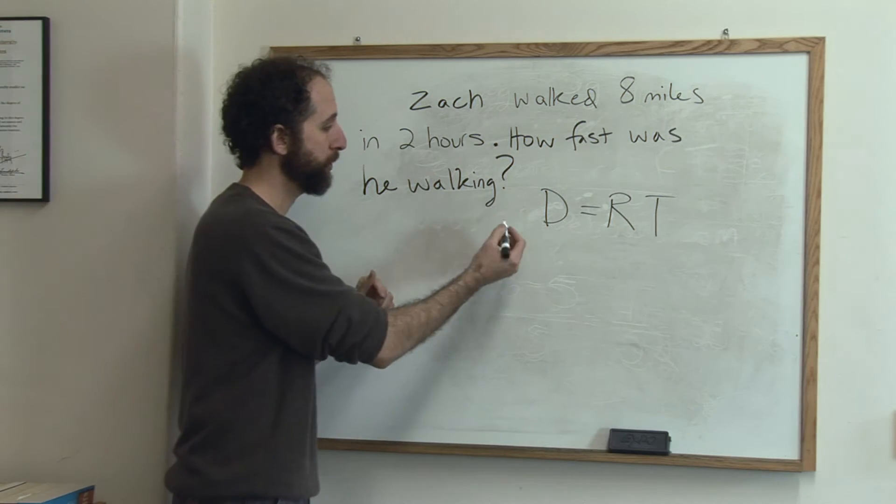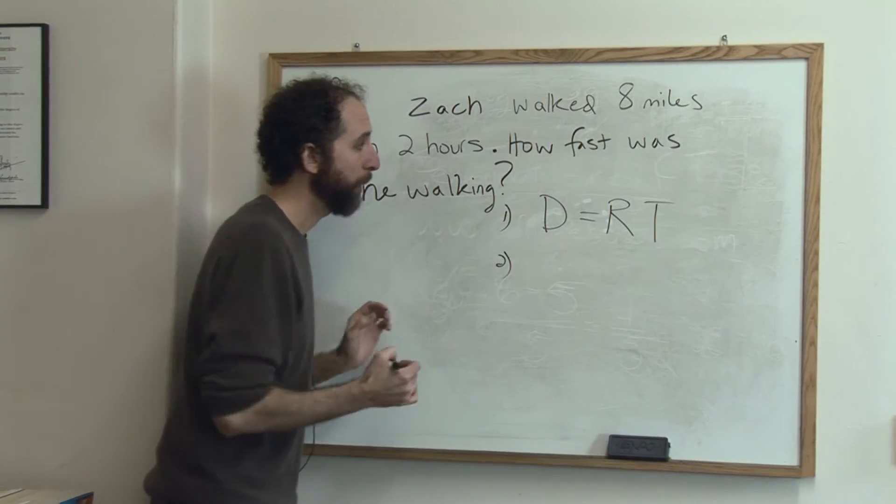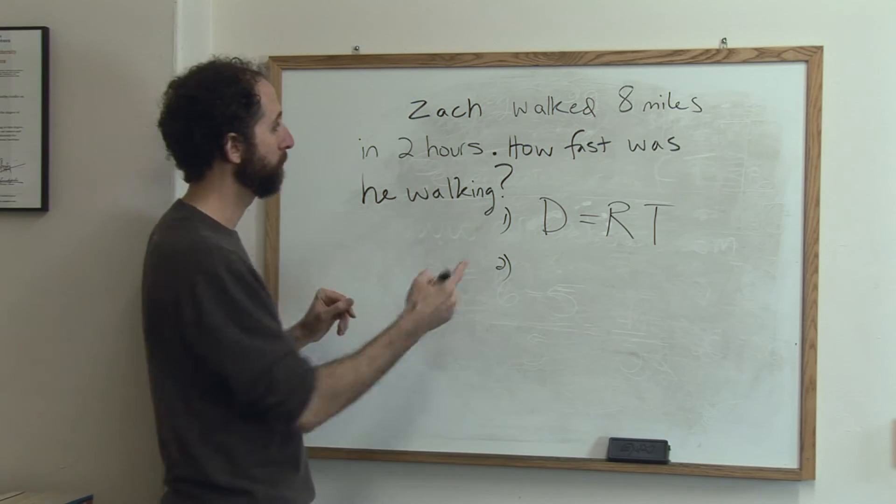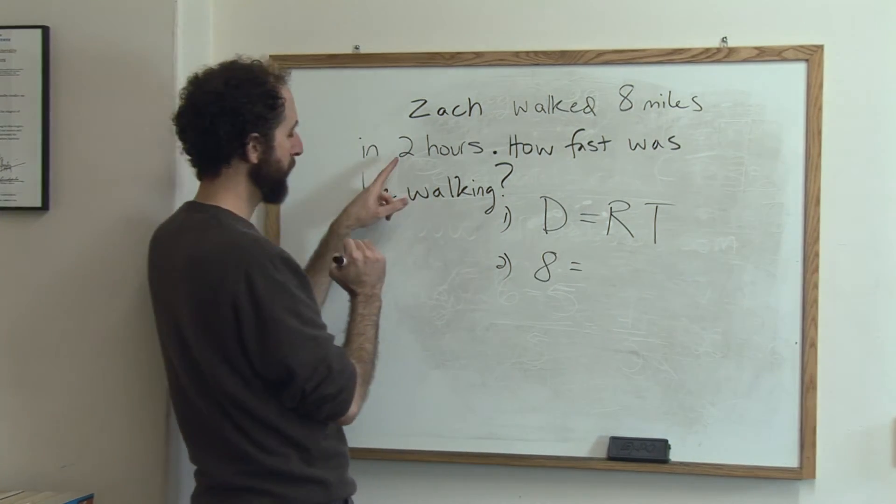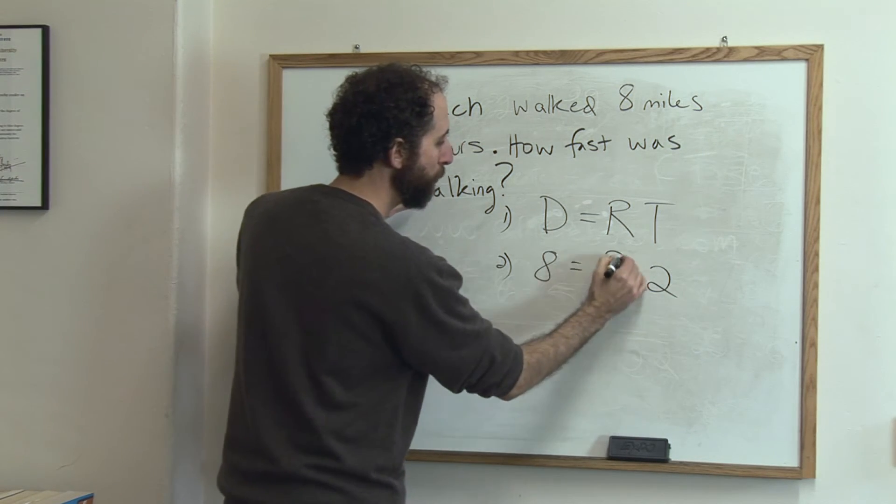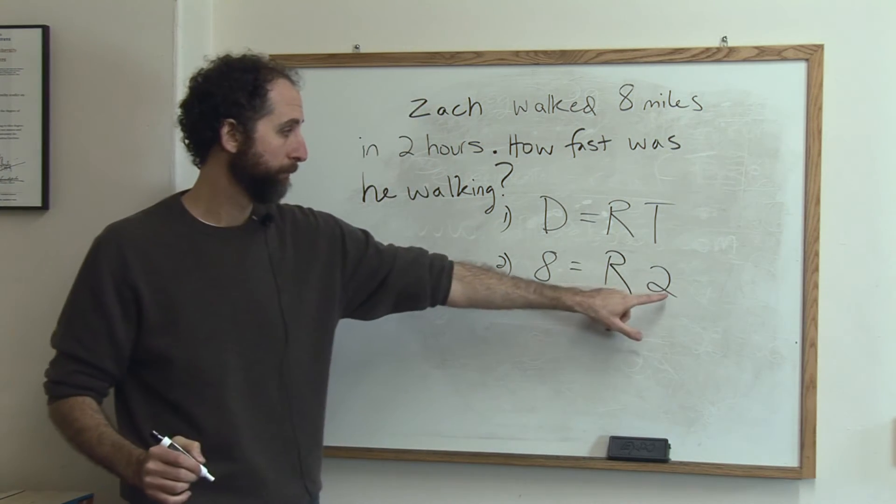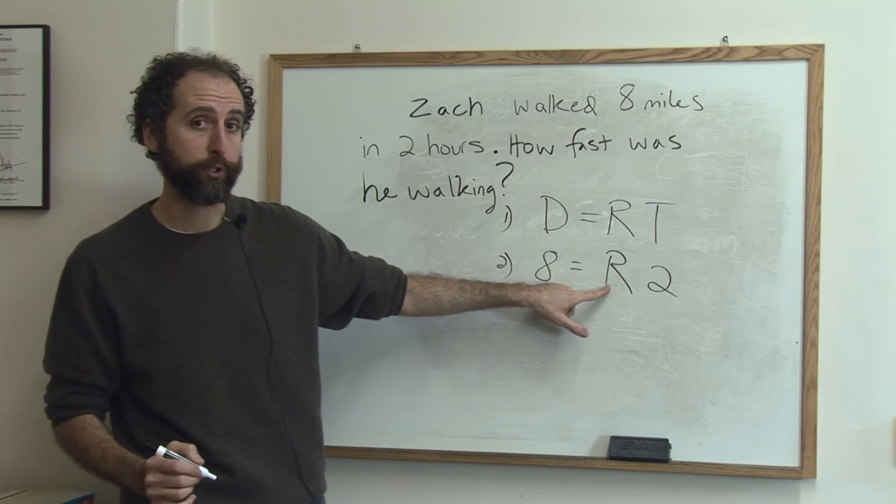So let's plug in. So step one is identify the formula. Step two, plug in what we know. So let's see. You walked eight miles. We know distance. In two hours, we know time. We don't know rate. So plug in what you know. Copy the variable, the letter, for what you don't know.